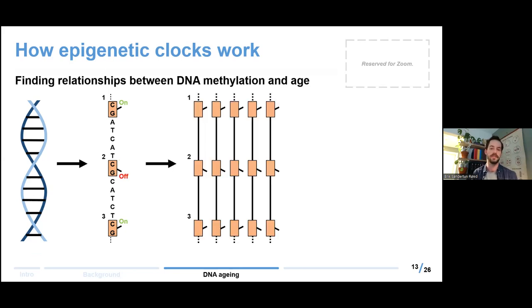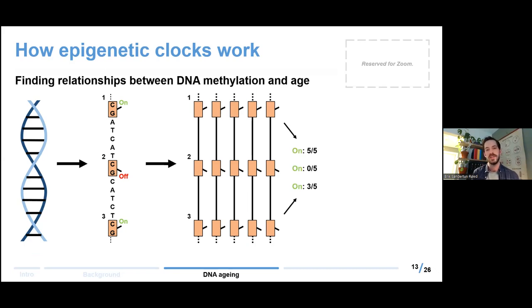Because we have many copies of our DNA — two in one cell and millions of cells — the real state of these light switches isn't binary. Each site is actually represented by many copies, so these are better represented as frequencies. The idea with an epigenetic clock is to represent the relationship between age and DNA in terms of the changing frequencies of these methylated sites — these light switch sites.